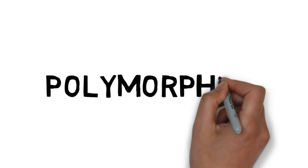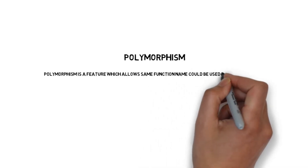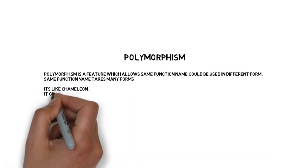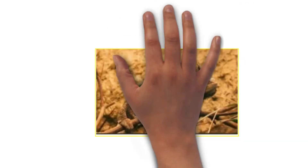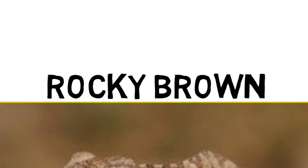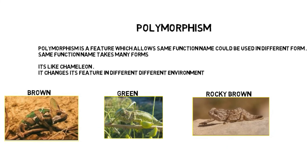The next topic we are going to study is polymorphism. Polymorphism is a feature in SystemVerilog which allows the same function name to be used in different forms. It's the same function, but it takes different forms. Let's take an example of a chameleon — it changes its features in different environments. In a brown environment it looks brown, in a green environment it looks green, in a muddy brown environment it looks muddy brown. It's the same chameleon, but its features change in different environments. In the same way, it's the same function name, but what's written inside the function changes in different classes.